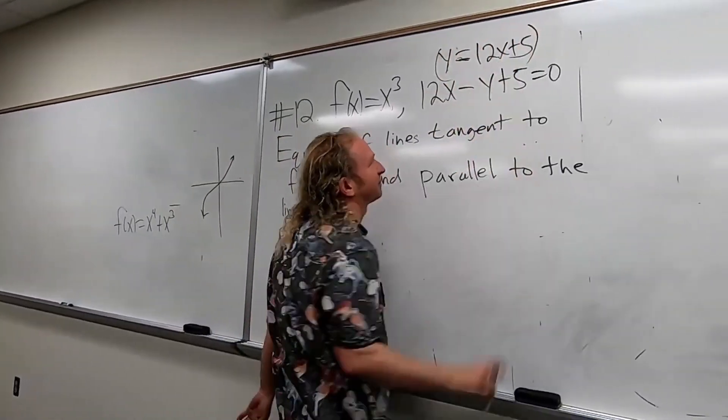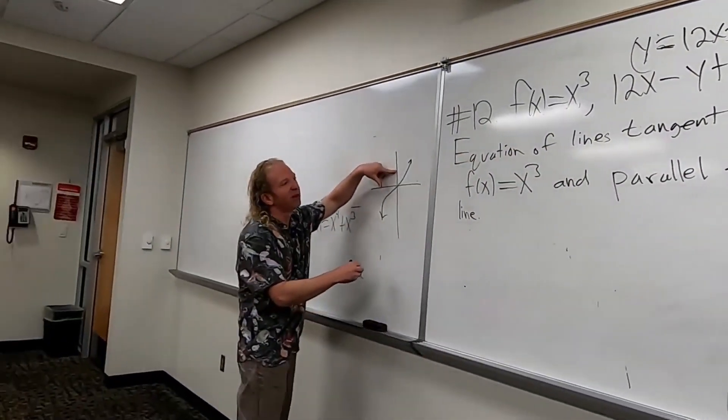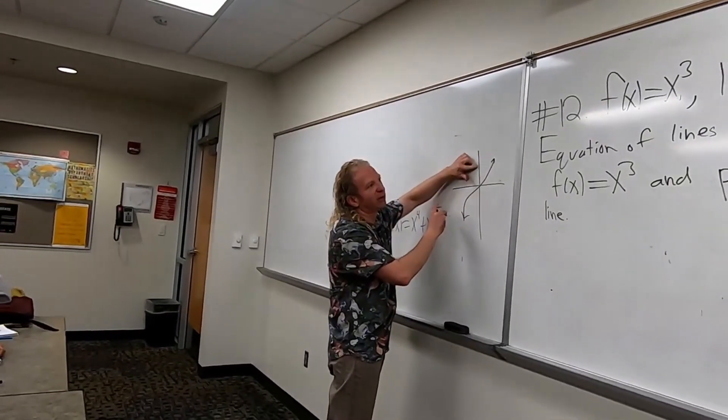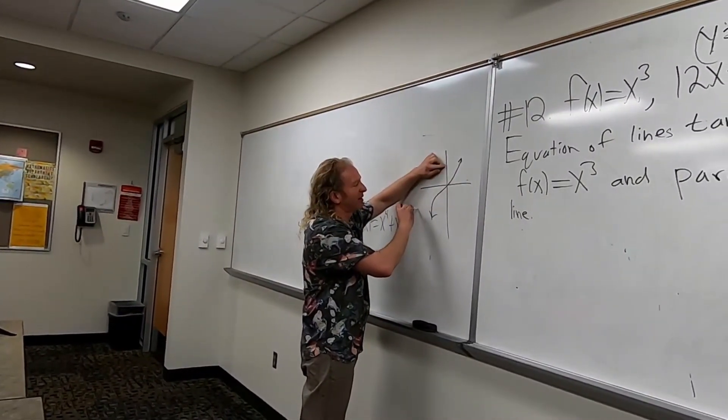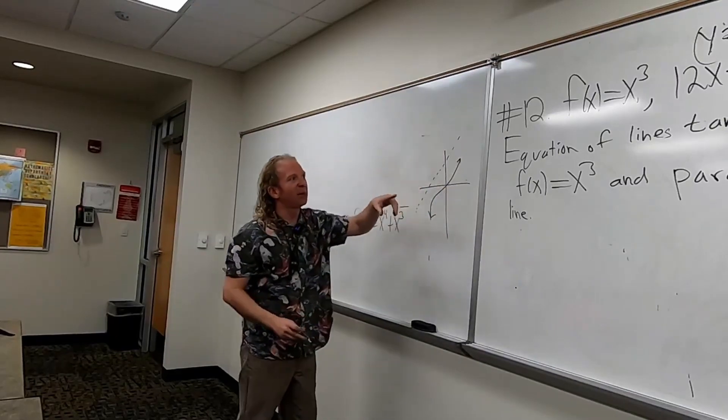So when you plug in 0, you're at 5, so you're up over here. So it probably looks something like this. I don't know, something like this, right?